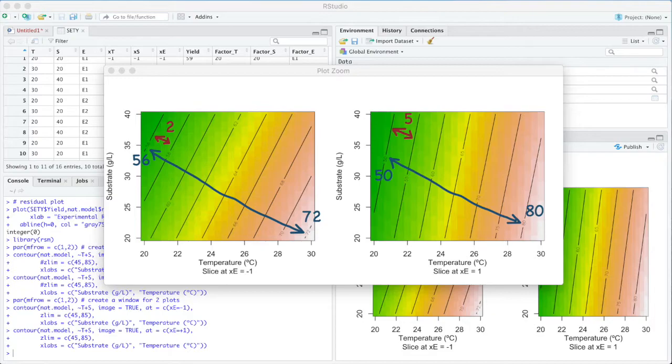To have the same color pattern and contour line levels in both plots, we are going to set the same parameters for the Z axis. The Z is the response axis in this example, the yield.